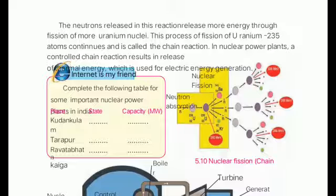The three neutrons which are released will be absorbed by another uranium molecule, and again that uranium will be converted into uranium-236. Again, barium and krypton will be generated and again 200 milliequivalent volts of energy will be generated. This is the chain reaction — three more neutrons are further absorbed by another uranium. This type of chain reaction takes place in the nuclear chamber.